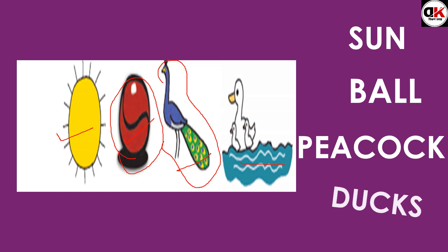Look at the last picture — it could be a duck. Children, you must read all the names of these pictures in English again and again, say them aloud, and practice your pronunciation.